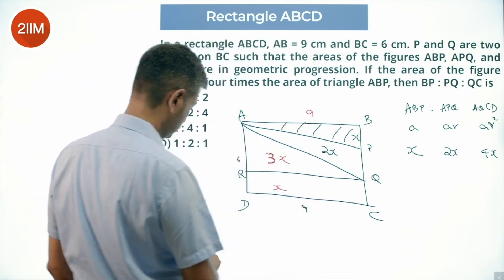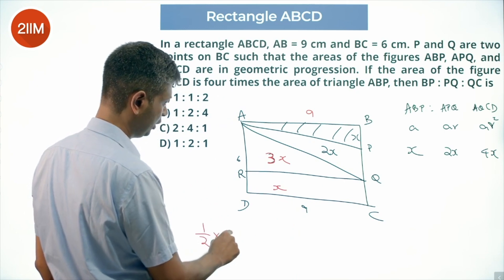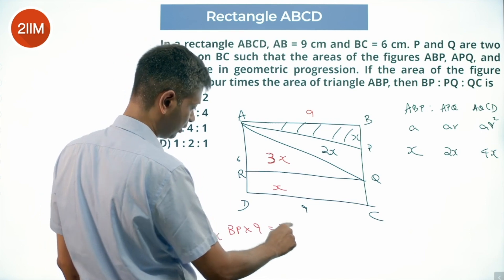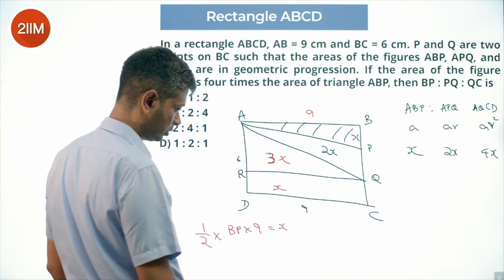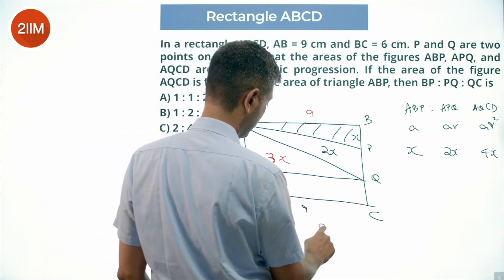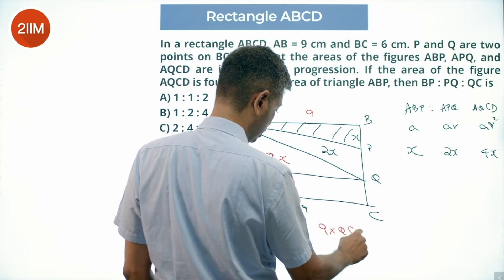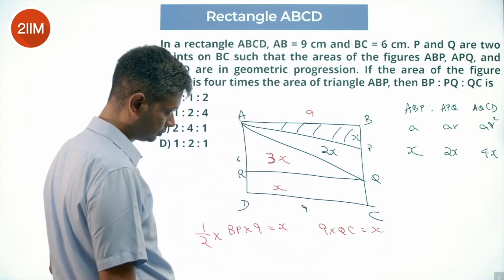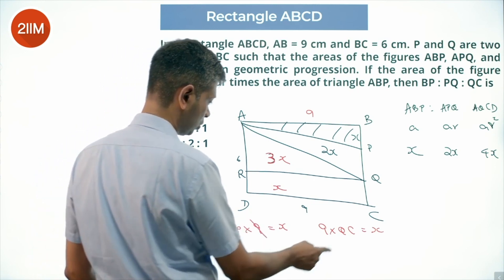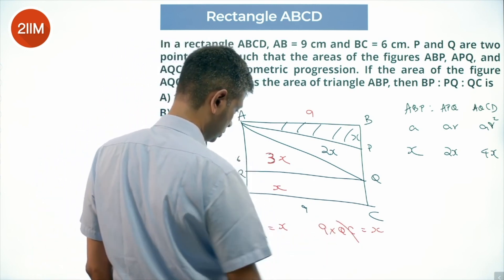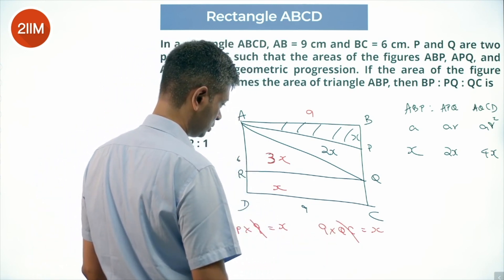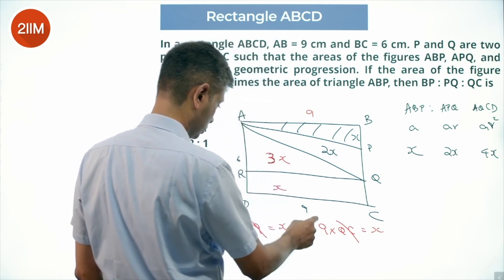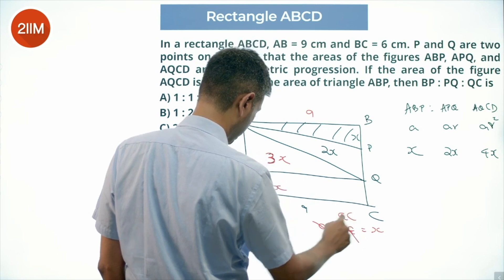Using the triangle area formula: half into BP into 9 equals X, and half into QC into 9 equals X. Since both expressions equal X, this means BP and QC satisfy 9·BP = 9·QC in their respective triangle areas.